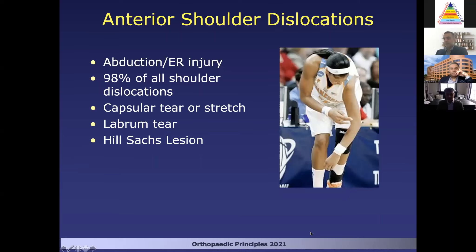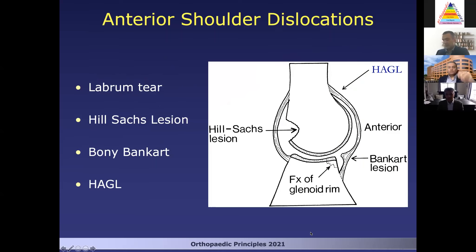Obviously you will think about labrum tears and Hill-Sax lesions when you see these. As you dislocate your shoulder anteriorly, you'll get your classic Bankart lesion, which is a tear of the labrum off the anterior rim. One of the things we're going to talk about is identifying whether there is a bony Bankart lesion or a fracture of the glenoid rim. You also want to think about the Hill-Sax lesion posteriorly, as this could have a significant impact on surgical planning. And also think about the HAGL lesion, which is analogous to the Bankart lesion but on the other side — you're going to get the avulsion of the humeral ligament off the humerus rather than off the glenoid.